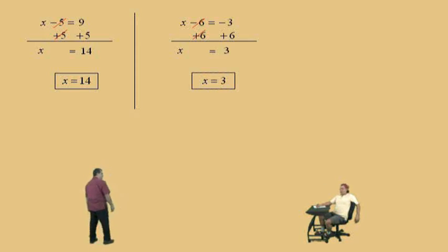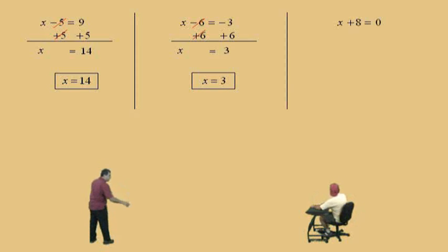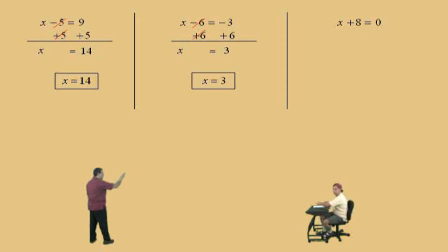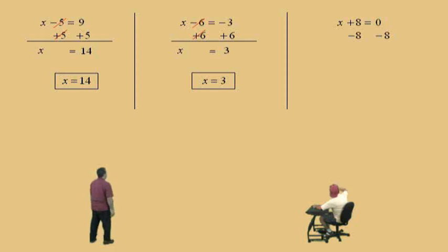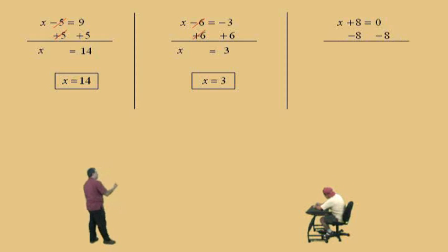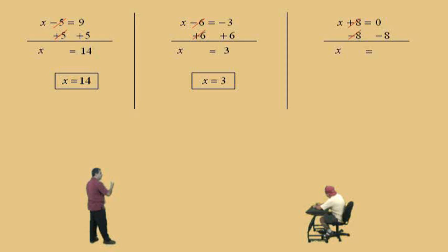Let's do another one. x plus 8 equals 0. Now don't get scared. We have x plus 8 this time, Charlie. So what do we need to do to both sides to get that one x by itself? Subtract 8. That's right. We'll bring down our bar and our equal sign. Plus 8 plus a negative 8 equals 0. Therefore, we have x on the left-hand side.